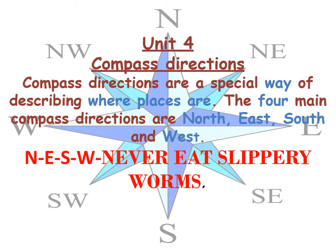Unit 4: Compass Directions. Compass directions are a special way of describing where places are. The four main compass directions are North, East, South and West. A nice and easy way to remember North, East, South and West is: Never Eat Slippery Worms.